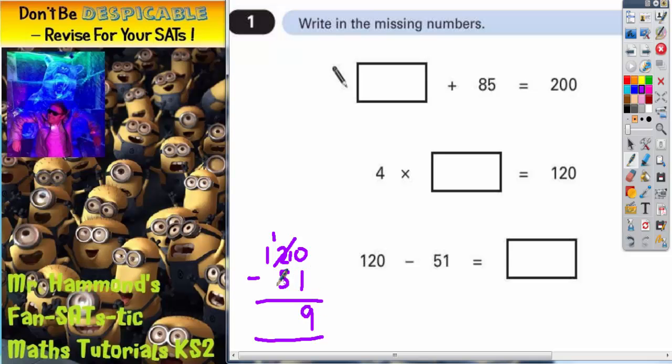1 take away 5, you can't do. So borrow 1, that makes 11. 11 take away 5 is 6. Final column, we're left with 0 here, so it's 0 take away 0, which is just nothing. So the final answer is 69.